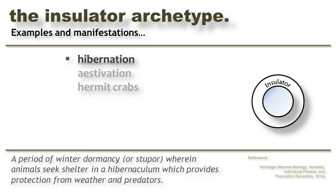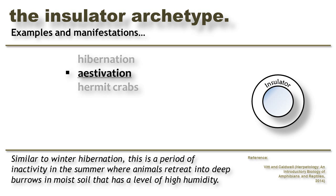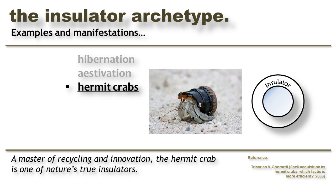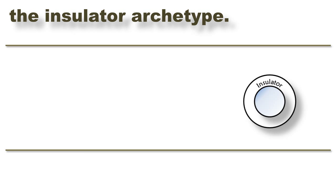Examples of Insulator behavior include hibernation, where an animal seeks shelter in a cave or other structure that provides protection from weather and predators. Estivation, a form of summer hibernation, occurs when some animals burrow deep into damp soil to protect themselves from heat and dehydration. Perhaps one of the best examples of an Insulator is the hermit crab. Unable to produce its own shell, the hermit crab will co-opt virtually any container large enough to house its body. When the shell is damaged or outgrown, the hermit crab abandons it in favor of a new one.